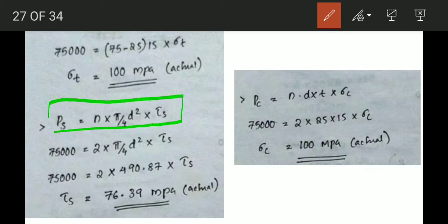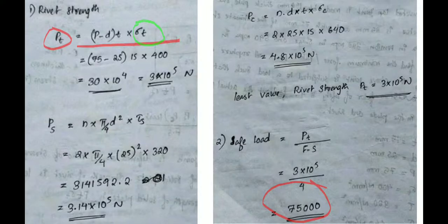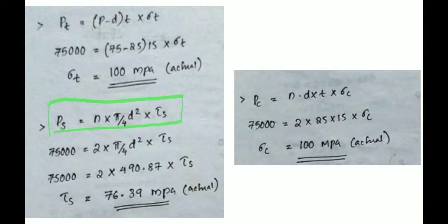For shearing: Ps = N × (πd²/4) × τ. Setting 75,000 = N × (πd²/4) × τ and solving gives τ = 56.39 MPa. Similarly, substitute the same safe load value into the crushing equation to find the actual crushing stress.